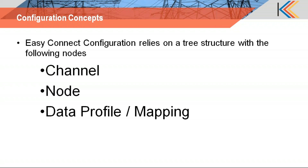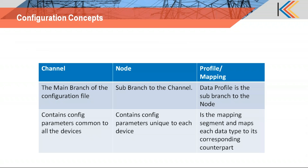The channel is the main branch of the configuration file; the node is a sub-branch of the channel; and the profile is a sub-branch of the node. A channel contains configuration parameters common to all devices downstream. A node is a more drilled-down sub-branch containing unique parameters for each device downstream that needs to be translated from an application upstream. The profile mapping in the Easy Connect workbench maps each data type to its corresponding counterpart.